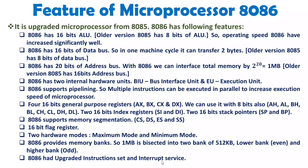Interrupt service is also upgraded. With 8086 we have 256 well-defined vectored interrupts, while with 8085 we had only 8 RST vectored interrupts. This significantly increases the interrupt handling capacity of 8086.